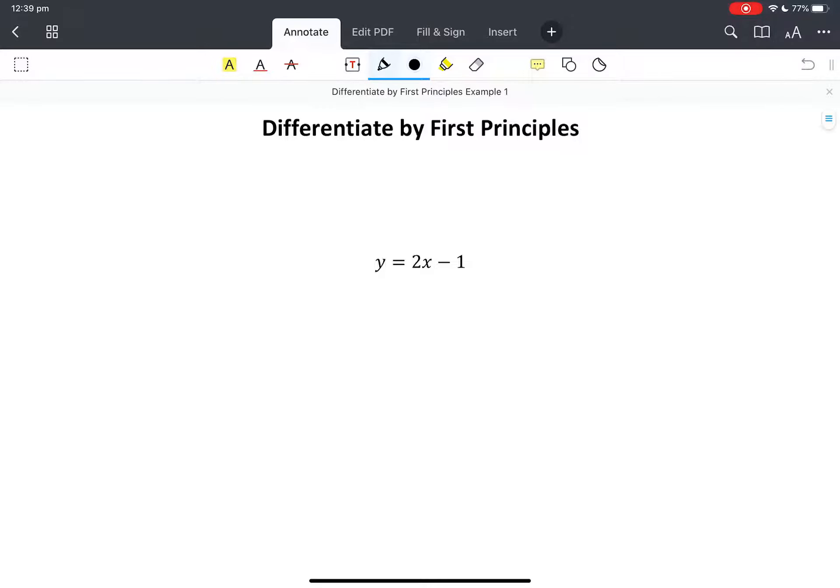Okay, let's do our first example, differentiate from first principles. What that means is get a function that tells me what that slope is.